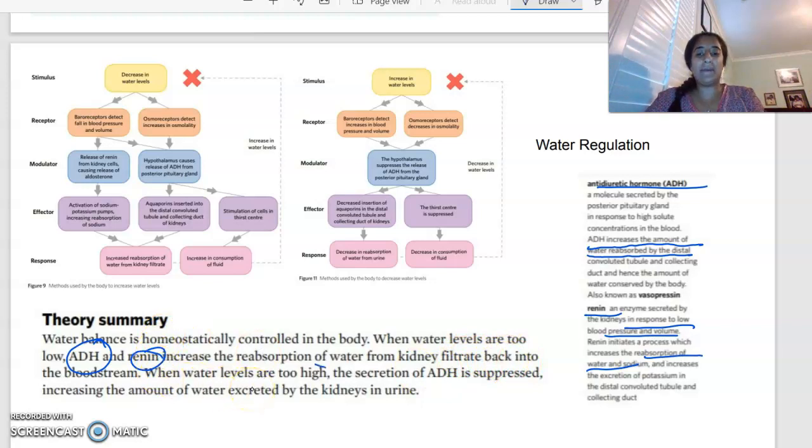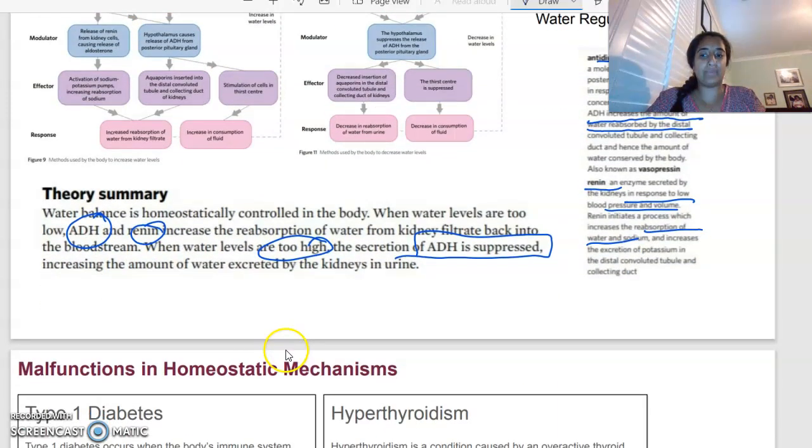So when water levels are too high, secretion of ADH is suppressed. But when water levels are too low, ADH is increased. And that's what this is summarizing over here as well. So you can pause the video and have a look. But again, looking at two low water levels and two high water levels and what happens there. The ADH and renin are the two main parts.